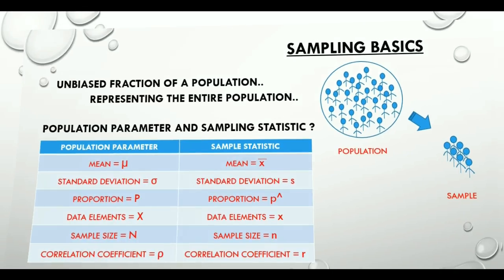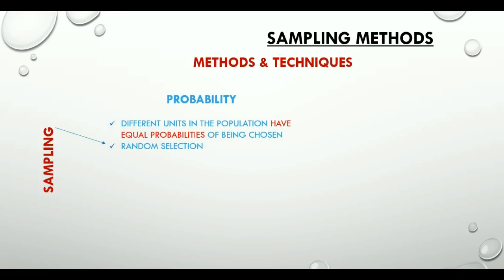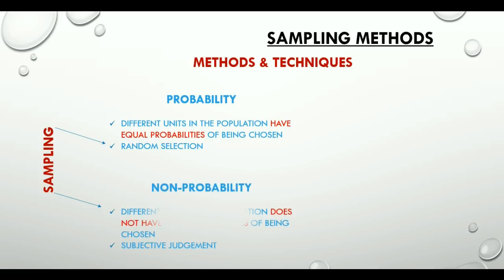Let's have a look at the most commonly used sampling methods and techniques. Broadly there are two methods: probability sampling, based on random selection where different units have equal chances of selection, and non-probability sampling, based on subjective judgment where different units do not have equal chances of selection.